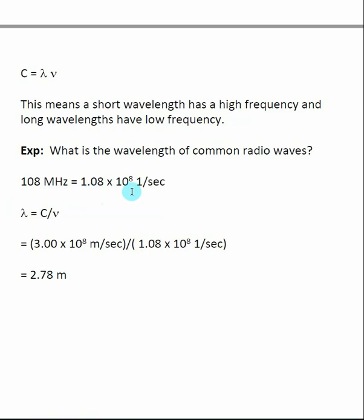The first thing I need to do is convert it to seconds. Megahertz, remember hertz is 1 over seconds. I don't want mega, I want just straight hertz. So 108 megahertz is equal to 1.08 × 10⁸ hertz, or 1 over seconds.